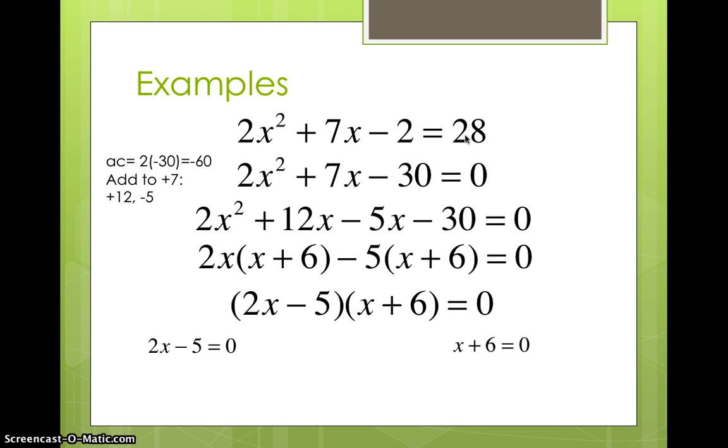Now I can set each factor equal to zero using the zero product property. We have 2x minus 5 equals zero and x plus 6 equals zero. Then we just solve like we did in Algebra 1. We'll add 5 to both sides for that first equation to get 2x equals 5, and divide through by 2. So x equals 5 halves, or 2.5, however you want to write it. For the other equation, we just subtract 6 from both sides, and we get x equals negative 6. It is as simple as that. That is how you use factoring to solve quadratic equations.